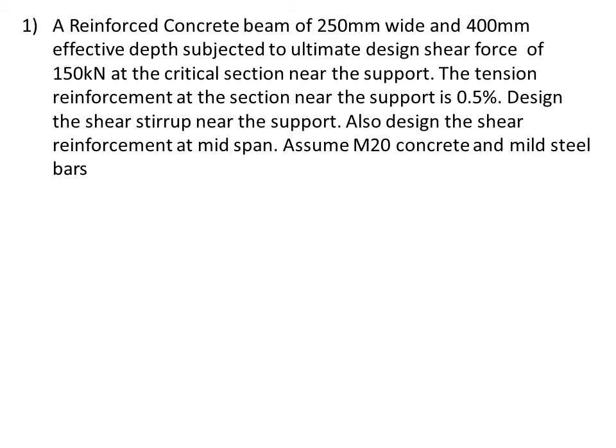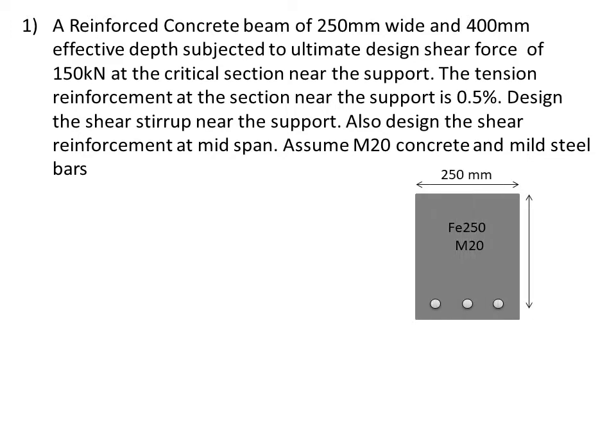This is the first question. A reinforced concrete beam of 250 mm wide and 400 mm effective depth is subjected to an ultimate design shear force of 150 kilo Newton at the critical section near the support. The tension reinforcement at the section near the support is 0.5 percent. Design the shear reinforcement near the support and also at mid span. Assume M20 concrete and mild steel bars.